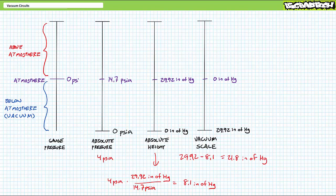Now flip-flop this to express the same value in the vacuum scale, an absolute height of 8.1 inches of mercury means the 30-inch glass tube has roughly 30 minus 8.1 or roughly 21.8 inches of empty space.